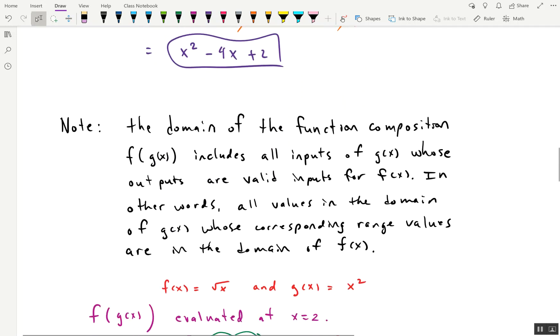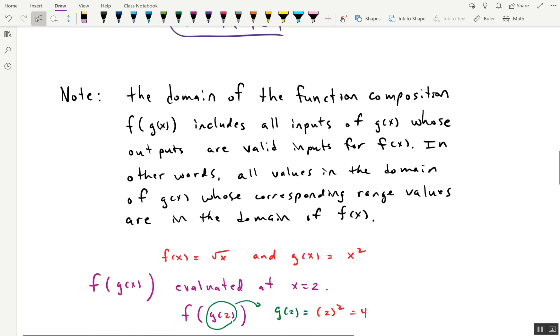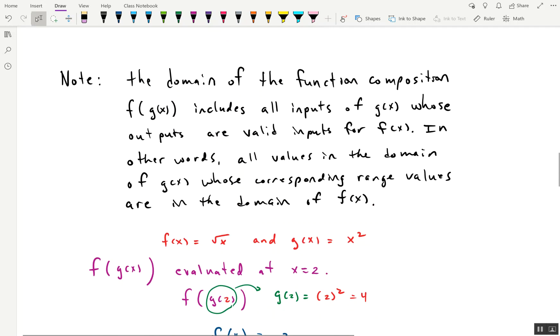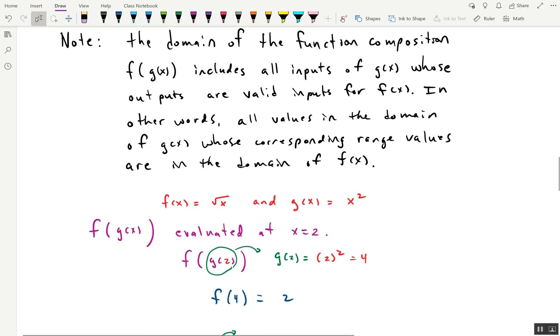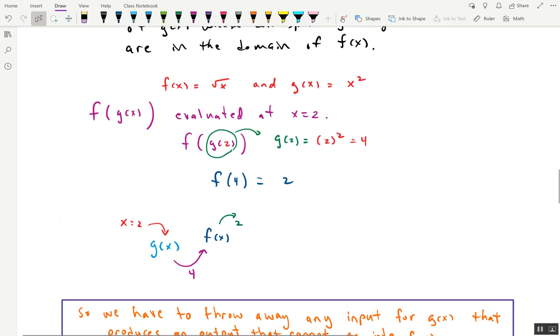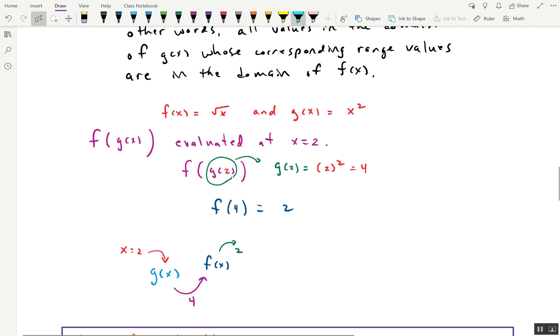So the domain of a function composition is probably the thing that is the most difficult about function compositions. And let's see if we can kind of break it down with a little made-up example that I have right here. So say f is the square root of x, and let's say g is x squared.